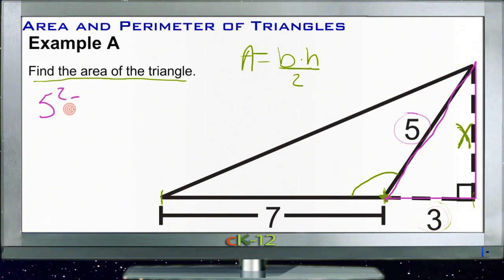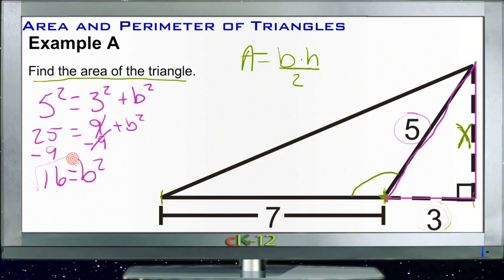5 squared equals 3 squared plus b squared. So we'll just subtract 3 squared from both sides. 5 squared of course is 25. And that's equal to, let me go ahead and punch these in, plus b squared. So we'll subtract 9 from both sides. Minus 9 over here. And we get 16 equals b squared.